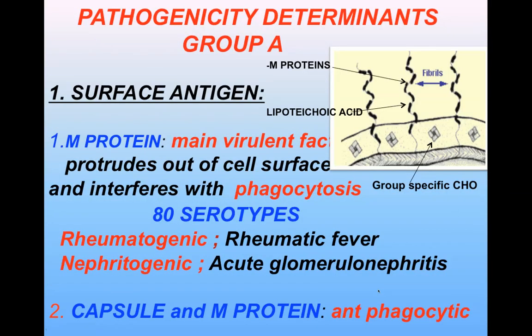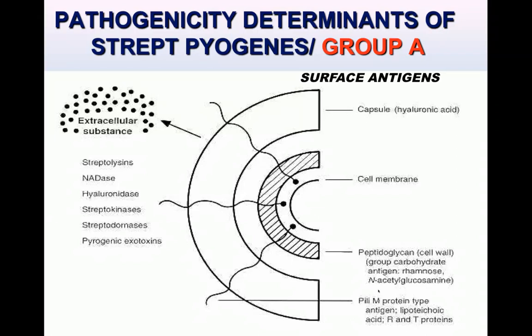Coming to the pathogenicity determinants, they have been classified into surface antigens and extracellular substances. For Group A streptococci, the capsule of hyaluronic acid prevents phagocytosis. There is a peptidoglycan layer with group-specific carbohydrates responsible for the Lancefield classification.